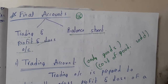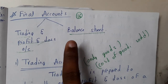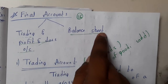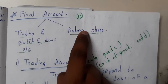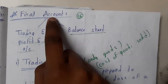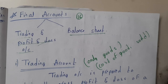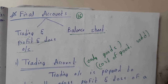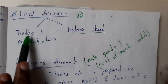Hello guys, we are back with our next lecture. In this lecture we are going to start the final accounts. I'm dividing this whole topic into four different videos. In the first video we'll go through the trading account, then profit and loss account, then balance sheet. Please watch them in series — don't skip directly to the fourth lecture or you'll have huge confusion.